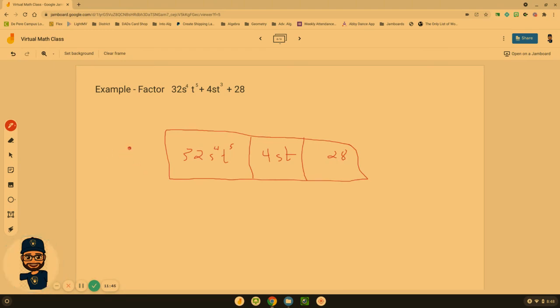So what's the GCF of 32, 4 and 28? Well, that's 4 because 4 goes into all of it. Again, can't take out an S or a T because this last box doesn't have any. So now we got to multiply. 4 times what is 32? That's 8. If I don't have any variables, these all have to come out. S to the 4th, T to the 5th.